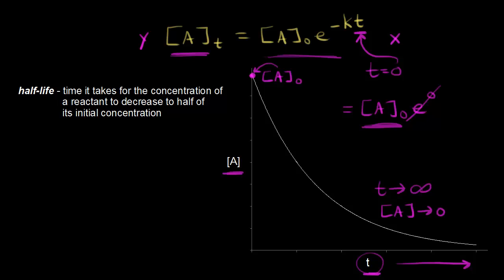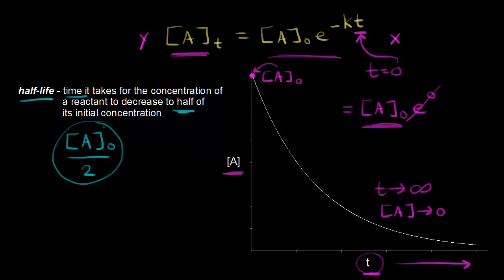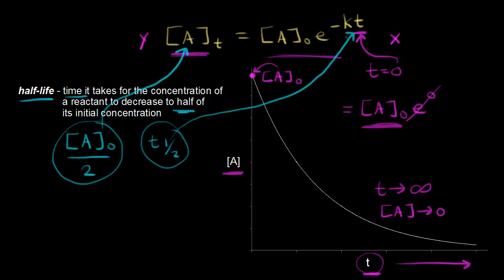Next, let's think about half-life. The half-life is the time it takes for the concentration of a reactant to decrease to half of its initial concentration. So if this is the initial concentration, after half of it has reacted we would get the initial concentration divided by two. We're going to plug this in for our concentration, and the symbol for half-life is t one-half. So when time is equal to the half-life, your concentration is half of your initial concentration.